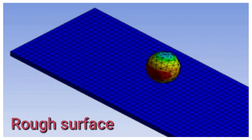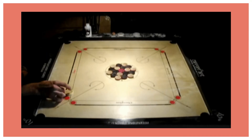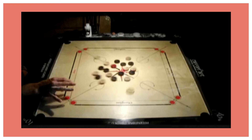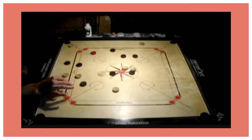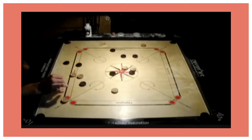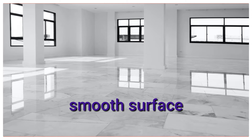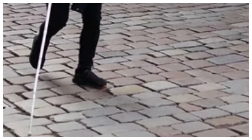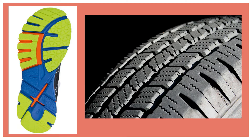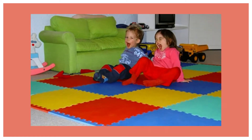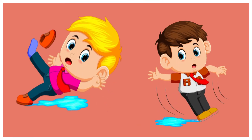A smooth surface usually helps us to move more easily, but sometimes when the surface is too smooth we need something that slows us down so that we do not slip and slide. This force is called friction.